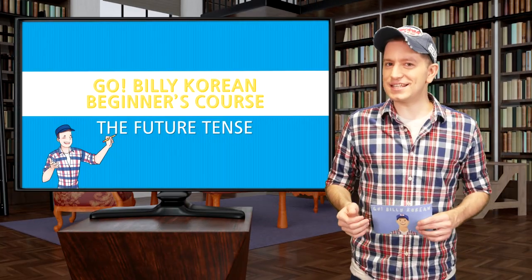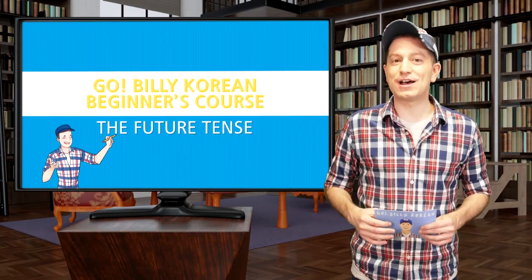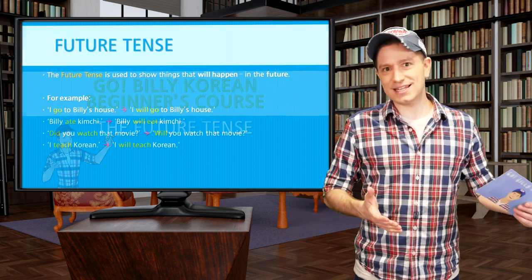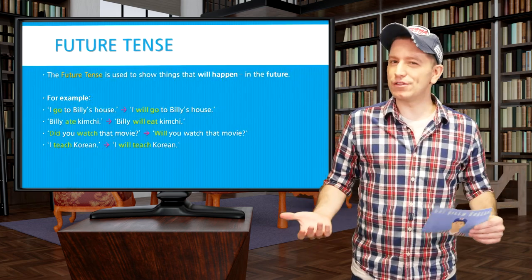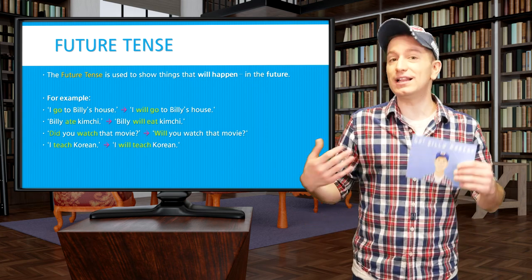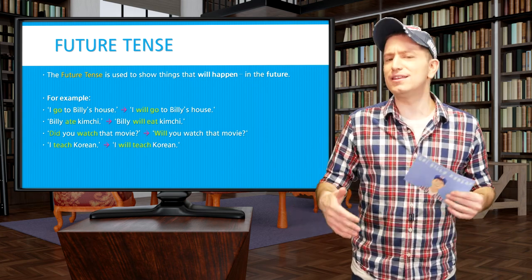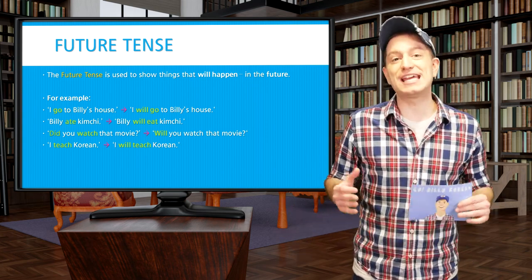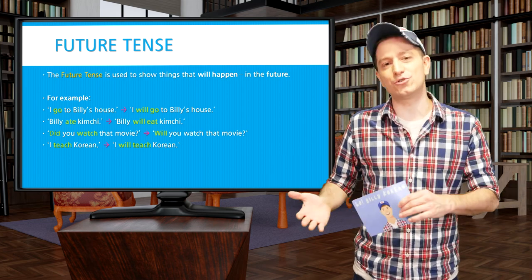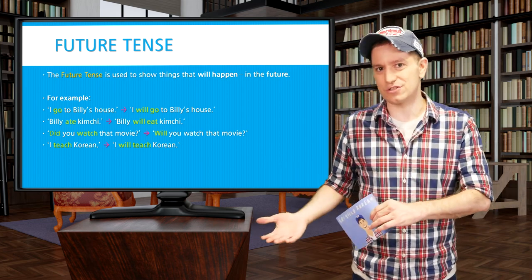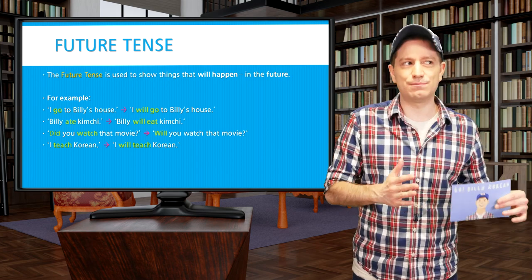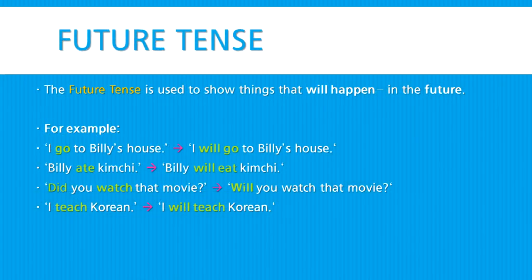Welcome back. In this lesson we're going to learn about the future tense. So far we've learned the present tense and past tense. The future tense is used for talking about anything that will happen in the future. So the sentence 'I go to Billy's house' could become 'I will go to Billy's house.' Or, 'Billy ate kimchi' could become 'Billy will eat kimchi.'